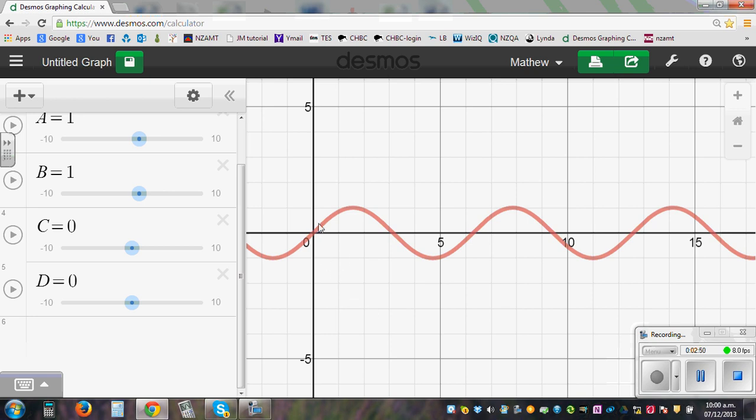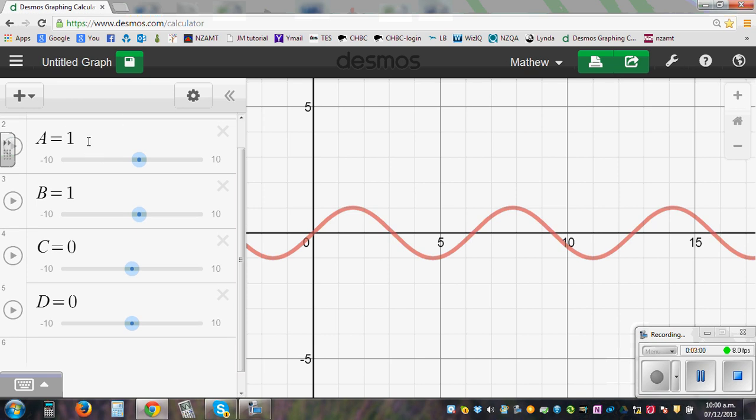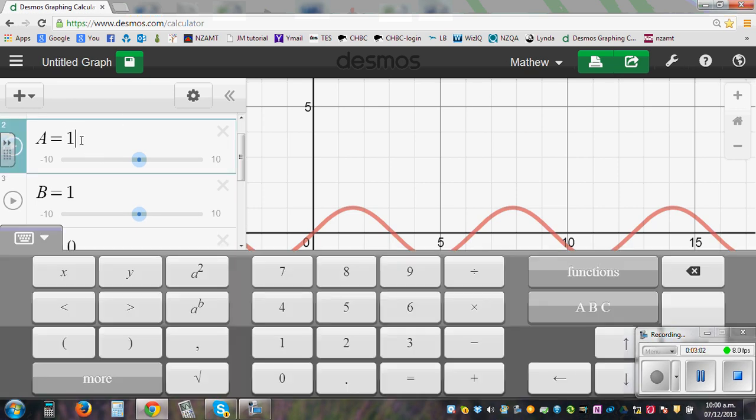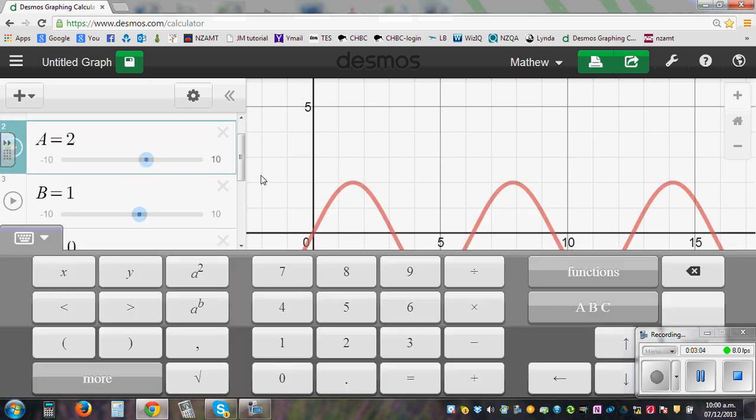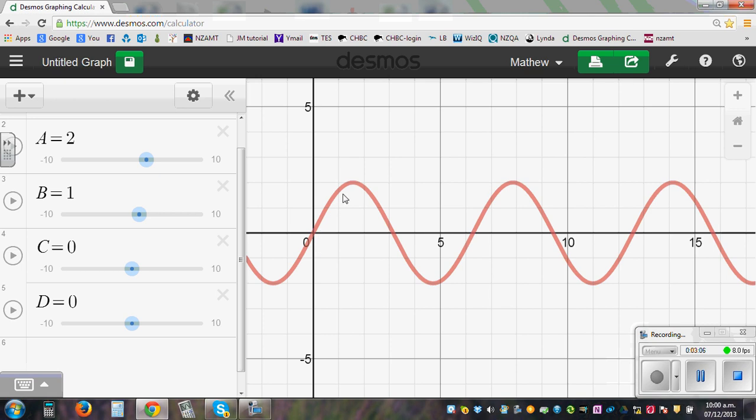So this is 1 period from 0 to 2 pi, which is 6.28. So let's see what happens when we change amplitude. Let us make that 2. So it has become, the amplitude has become 2 here. So this is the distance from the baseline to the maximum or the distance from the baseline to the minimum is called the amplitude.